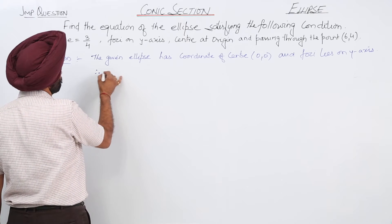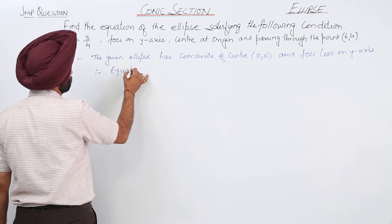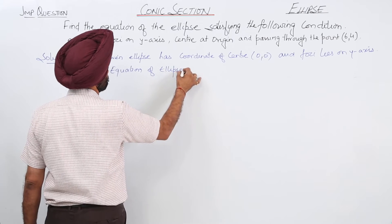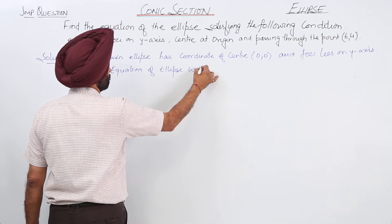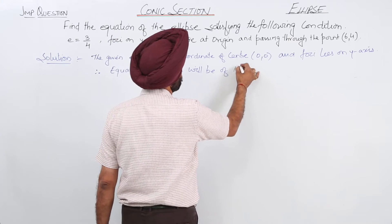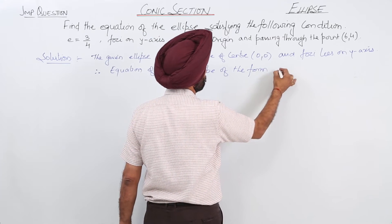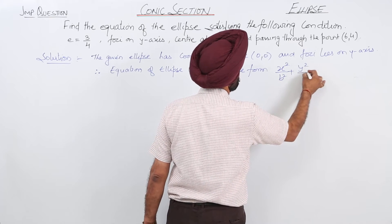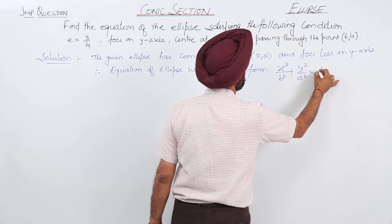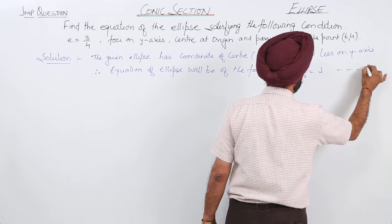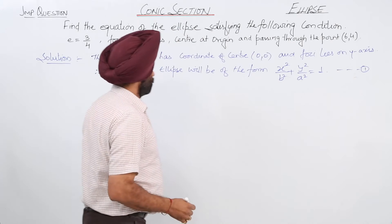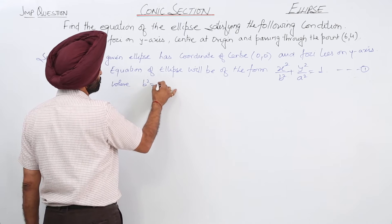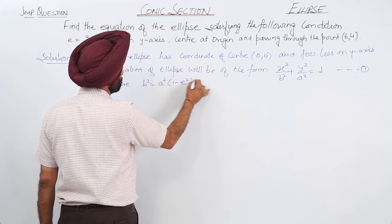Therefore, equation of ellipse will be of the form x² upon b² plus y² upon a² is equal to 1, where b² is equal to a² times (1 minus e²).